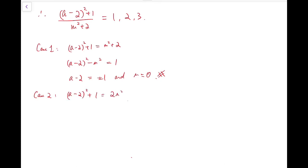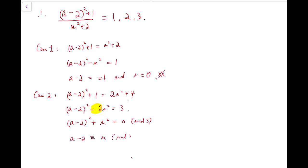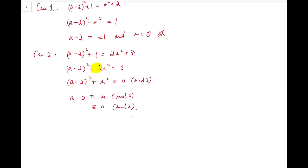Case 2: the fraction equals 2, so we simplify and get (a minus 2) squared plus 1 equals 2m squared plus 4. Taking mod 3 on both sides, we get (a minus 2) squared plus m squared congruent to 0 mod 3, because the coefficient minus 2 becomes plus 1 mod 3. Since the sum of two squares is congruent to 0 mod 3, both must be 0 mod 3. But then (a minus 2) squared and m squared are both 0 mod 9, which contradicts the equation since the difference is exactly 3 — the right-hand side would be congruent to 3 mod 9, not 0. So again, a contradiction.